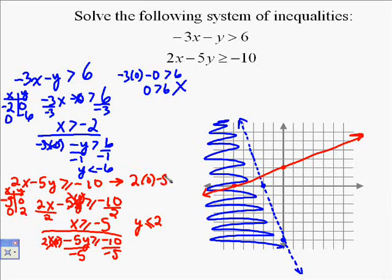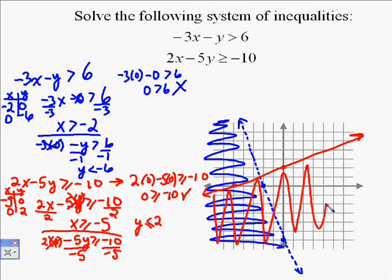Now I check 0, 0 again. And this time when I check 0, 0, I find out that 0, 0 is actually true. Right? 0 is greater than or equal to negative 10. That's a true statement. So we need to shade on the side of 0, 0. Notice I'm shading up and down just to help me identify where the overlap is.